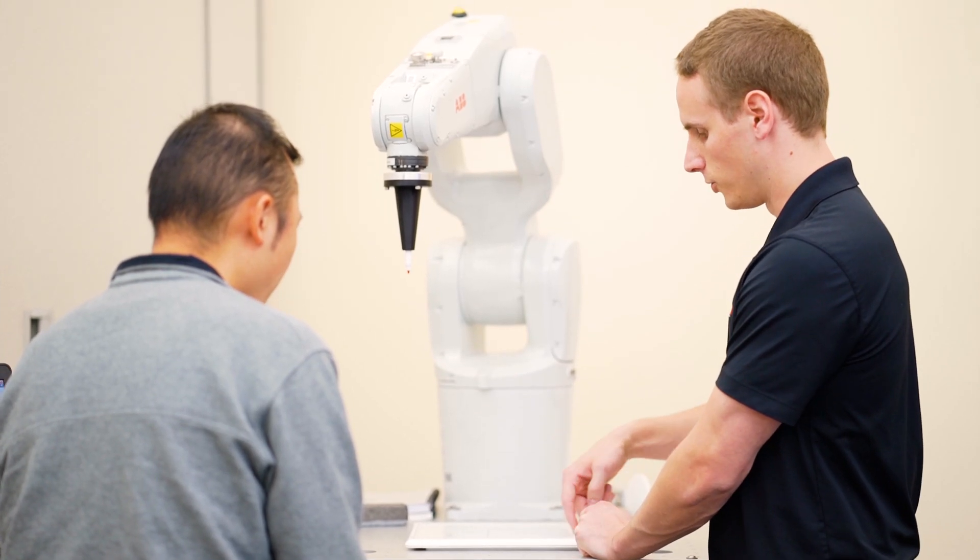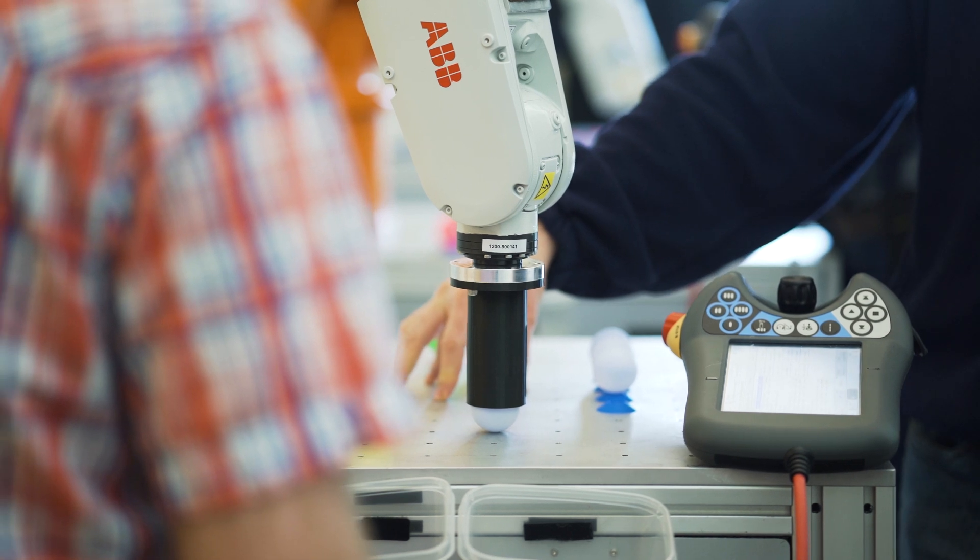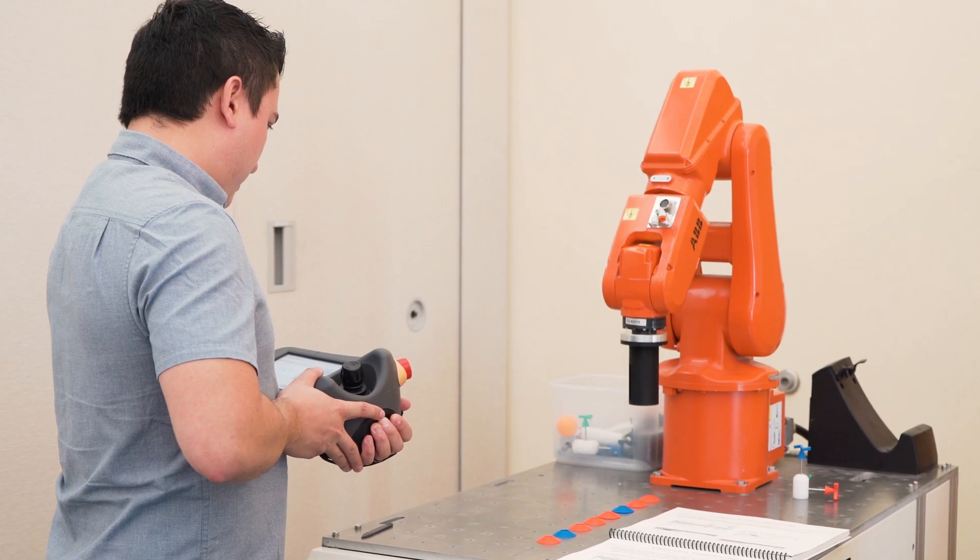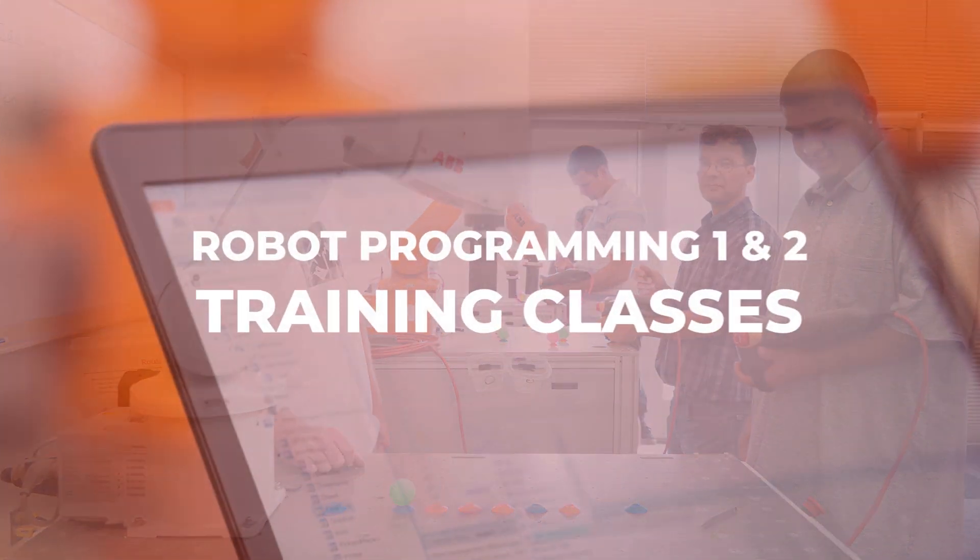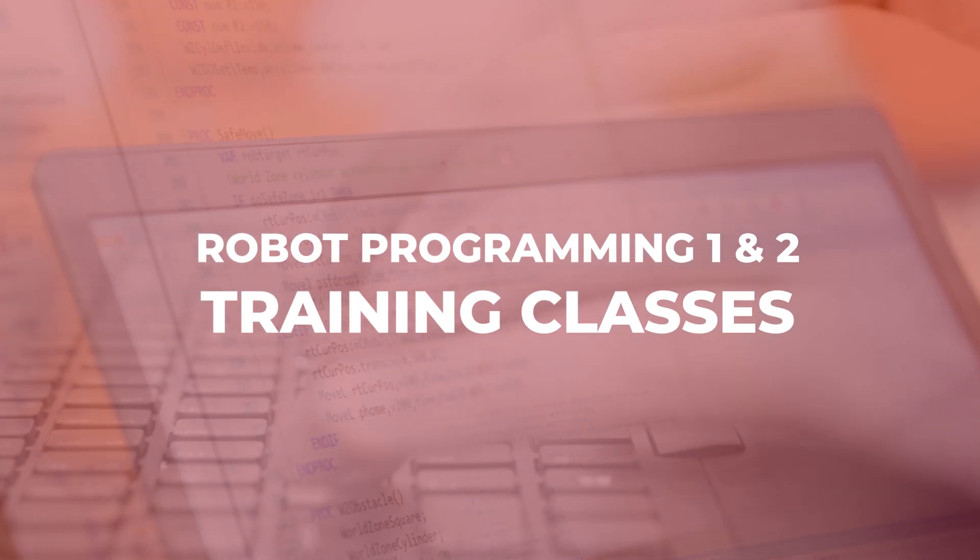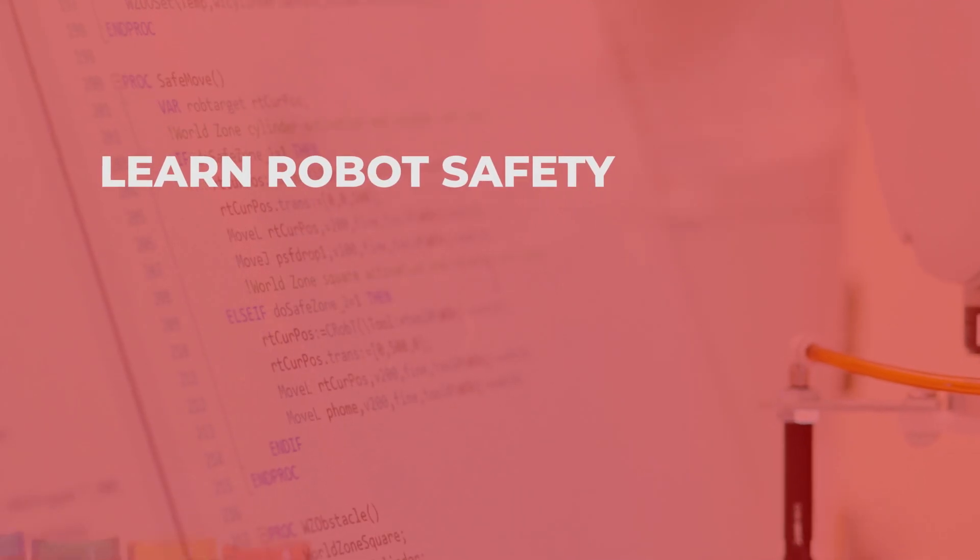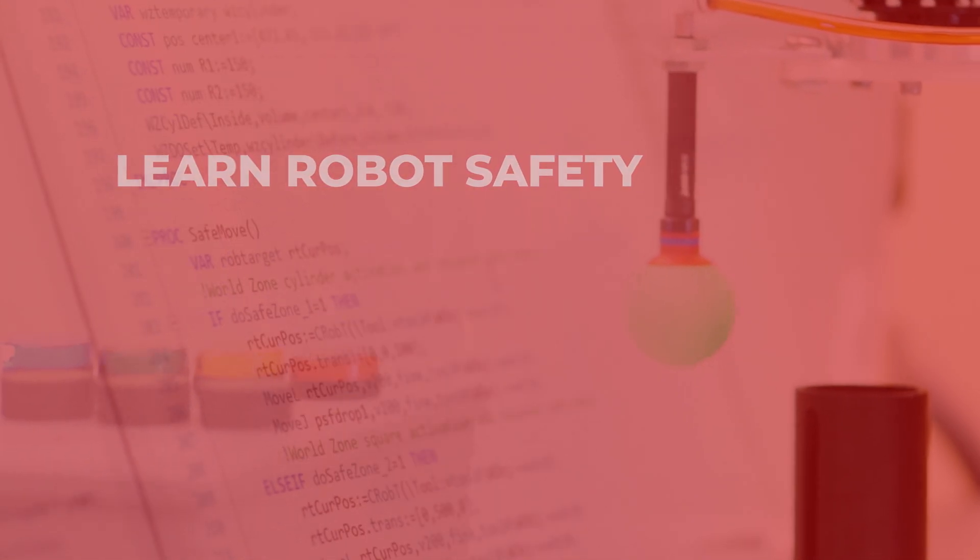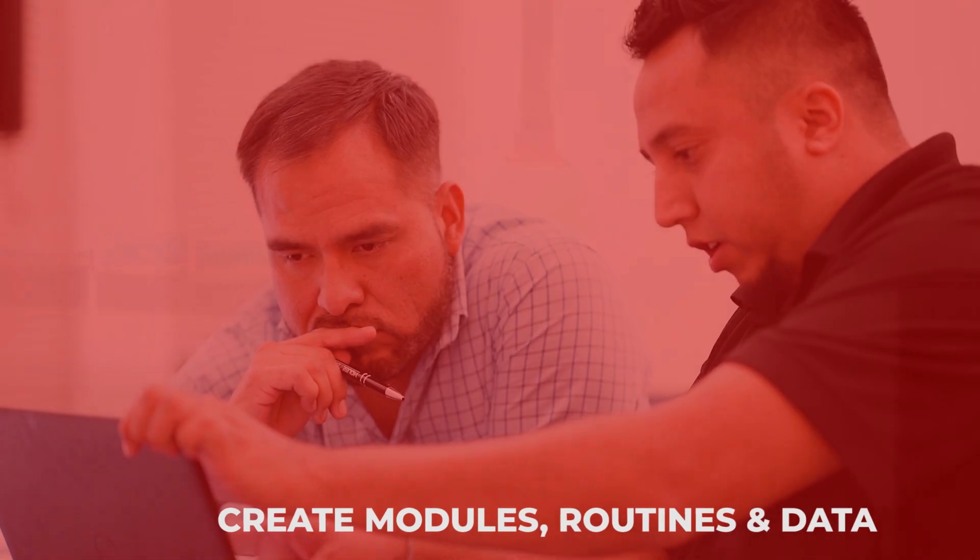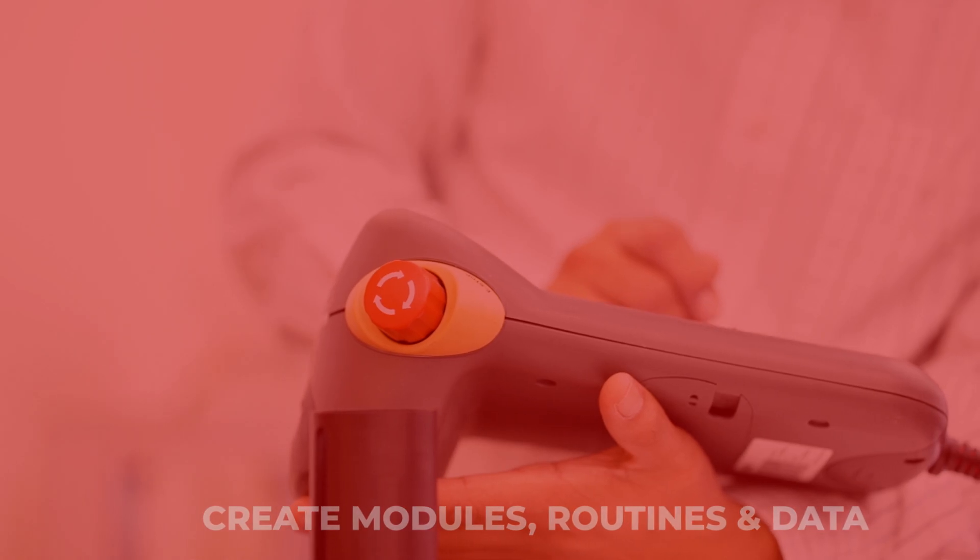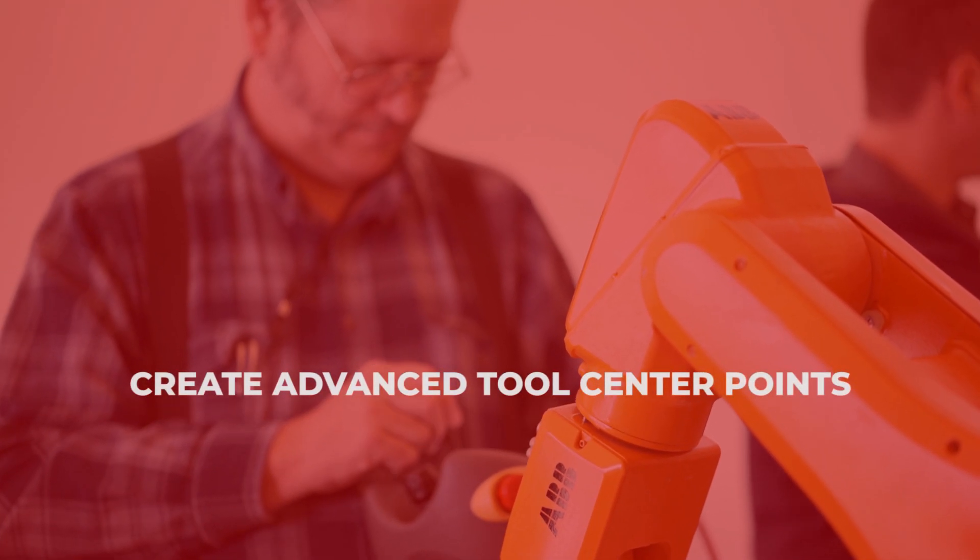If you have taken our Robot Programming 1 class, we invite you to go beyond the basics and increase your skill set with Robot Programming 2. In Robot Programming 2, we cover topics such as practicing safety as it pertains to the robot system, learn how to create and use modules, routines, and data, create advanced tool center points,